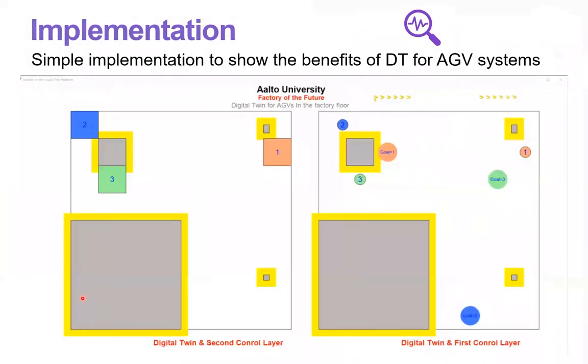Here, you can see the implemented system. Actually, this blue line shows the direction of AGV number two toward its goal or destination.